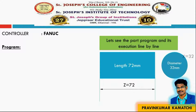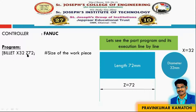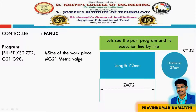In the first line we have to mention the size of the workpiece. The workpiece is named as BILLET, and X is going to refer to the diameter of the billet and Z is going to refer to the length of the billet. Then we have to give some instructions to the system: G21, which means we are going to use metric data as input, and G98, which means we are going to give feed in feed-per-minute.